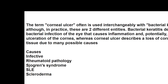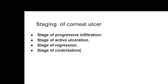Systemic disorders can manifest in the eyes in different manners, and one of them would be the corneal ulcer. Corneal ulcers are quite common and one of the most common causes of blindness. They are staged based on clinical presentation: stage of progressive infiltration, stage of active ulceration, stage of regression, and the stage of cicatrization. The stage of cicatrization is the most critical stage where the patient would have an opacity, and since corneal transparency is essential for proper vision, if the cornea becomes opaque, blindness occurs.